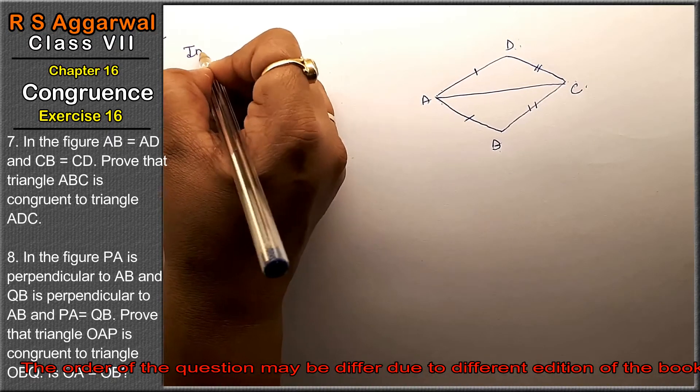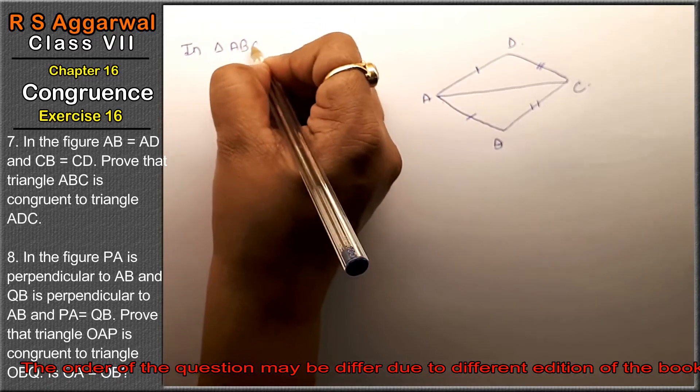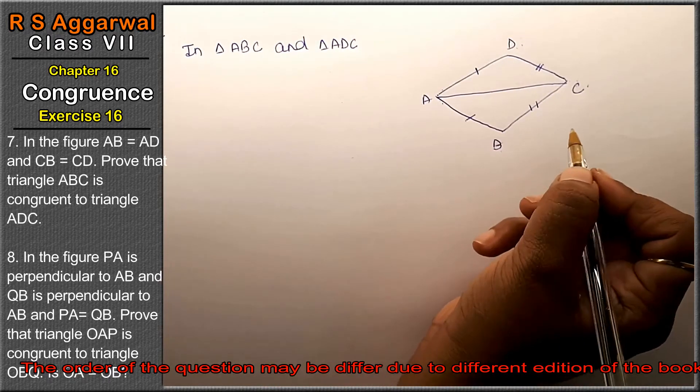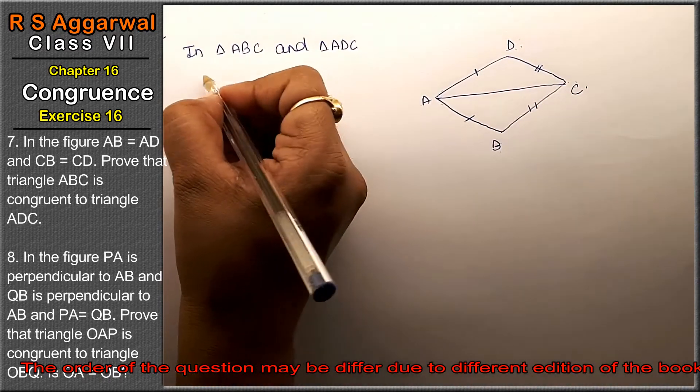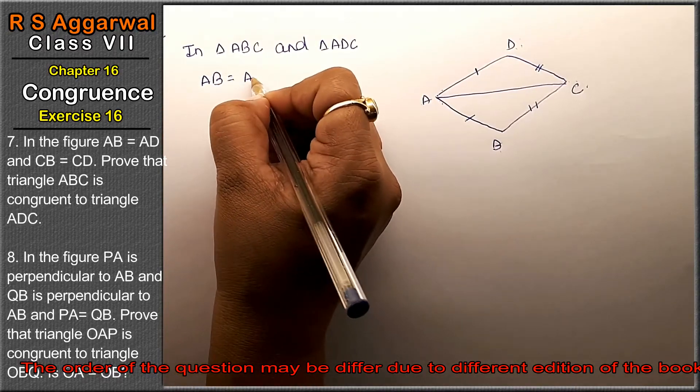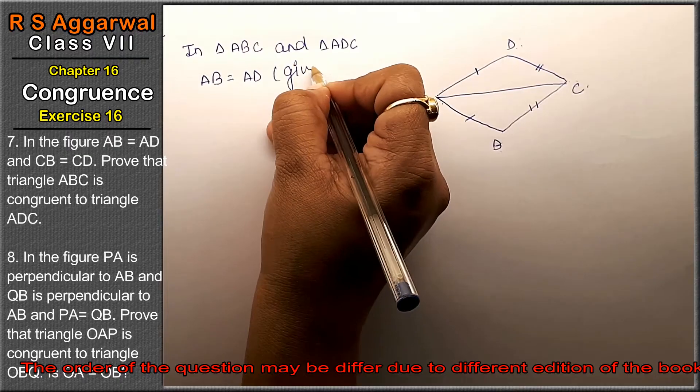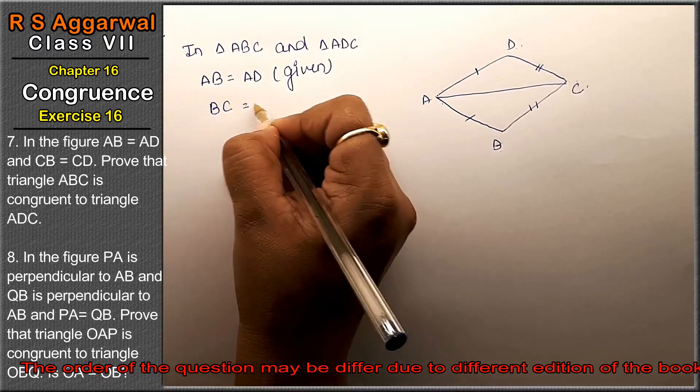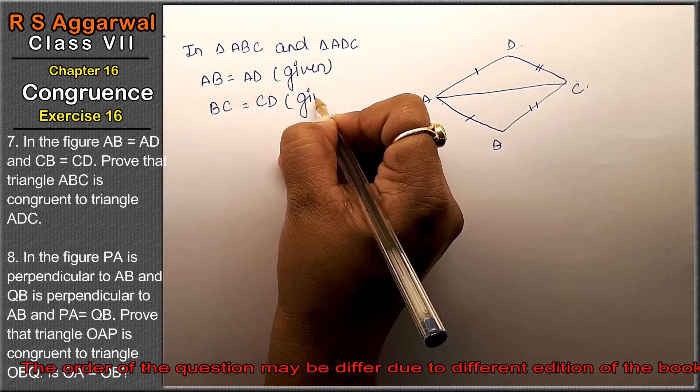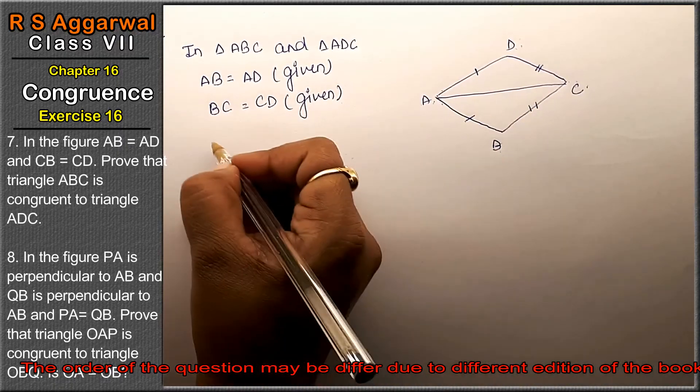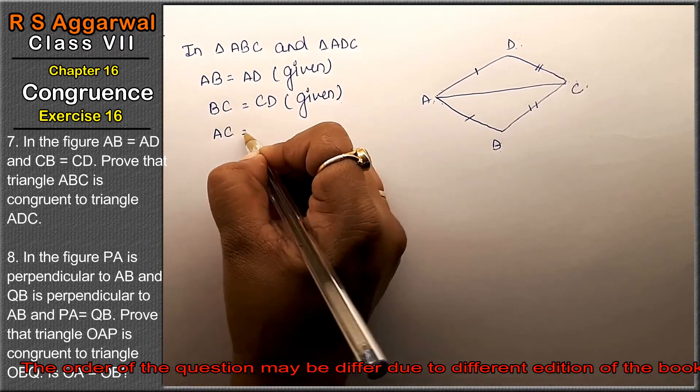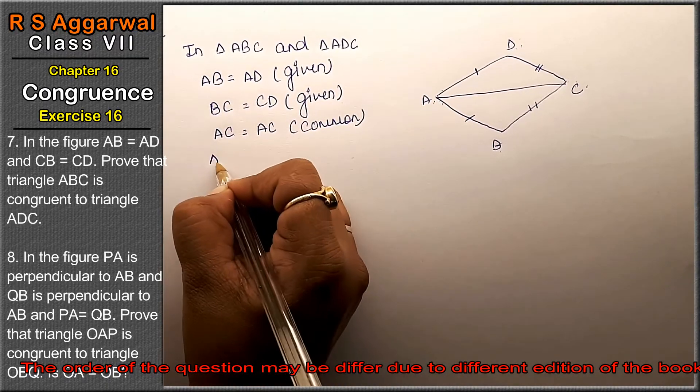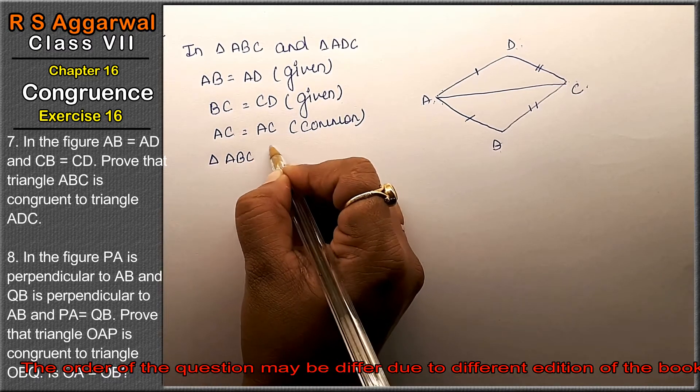So in triangle ABC and triangle ADC, these two triangles are taken. AB equals AD, this is given. CB equals CD, this is given. BC equals CD, this is given.